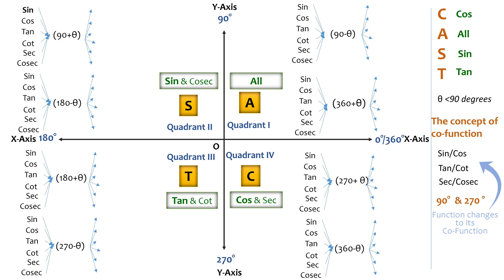Since it has 90°, the function changes to its co-function: cos. And since it's in the second quadrant where sine is positive, it will be +cos θ. Practically, this can also be used to simplify expressions — for example, sin 120° = sin(90°+30°) = cos 30° = √3/2.